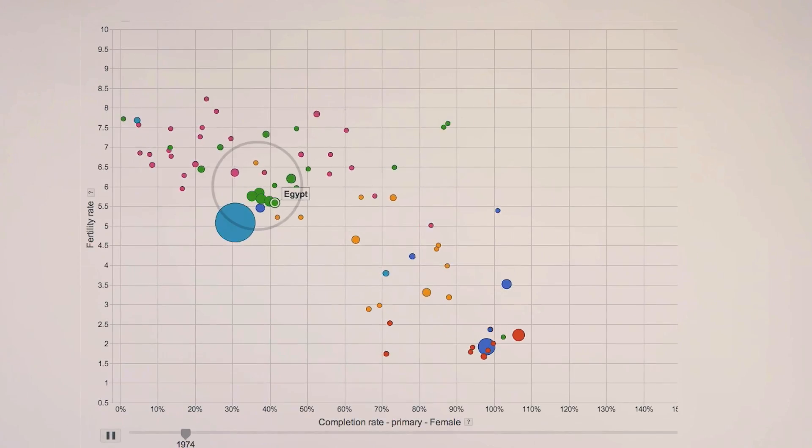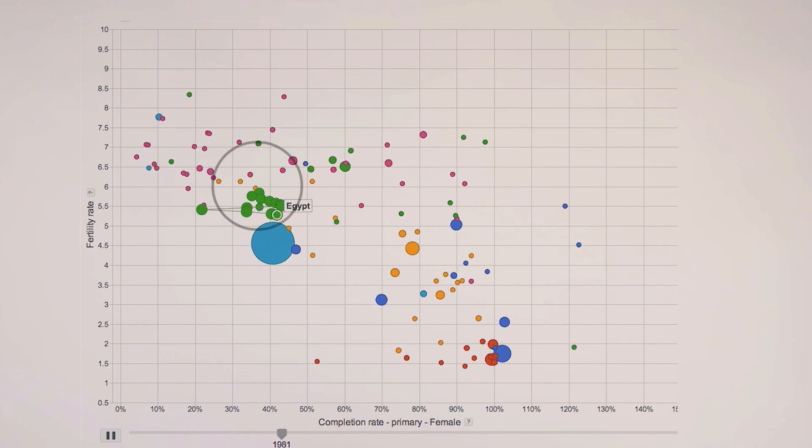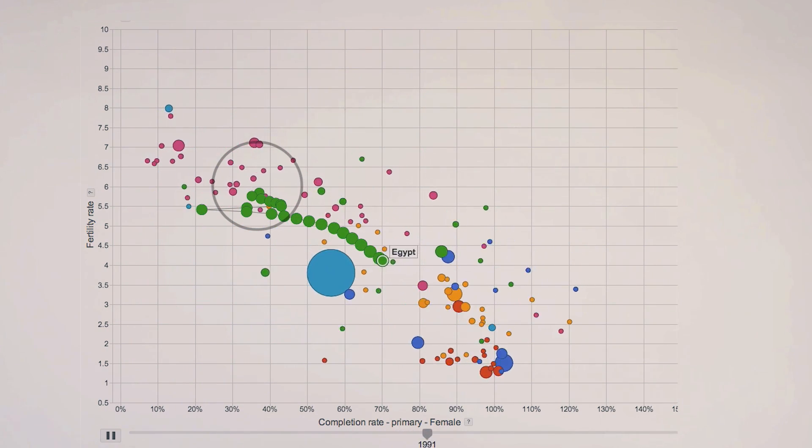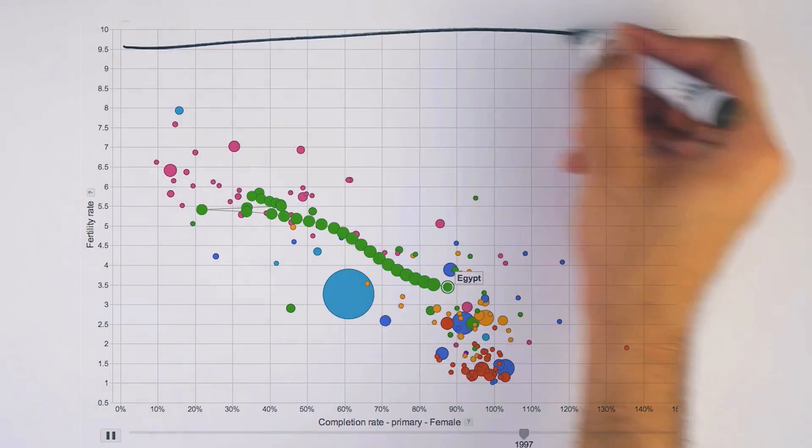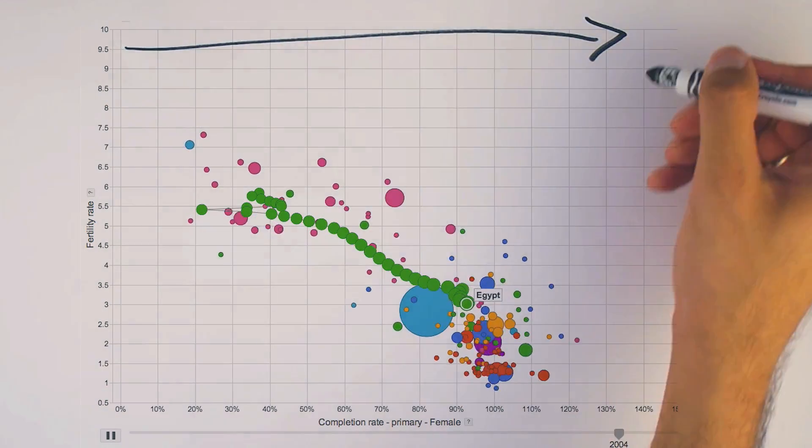How about Egypt? In the 1970s, less than 40% of girls completed primary school, and in the last 30 years that number has gone up to more than 90%. At the same time, fertility rates have halved.